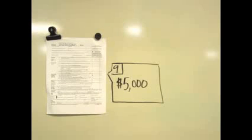On line 9, you add Sections 7 and 8 to get your total payments and credits. For Bill, this comes to $5,000.